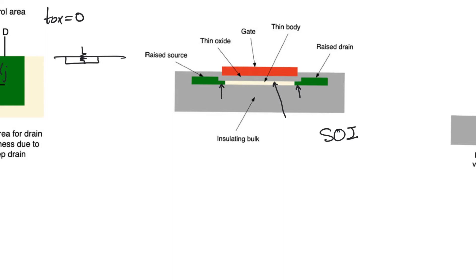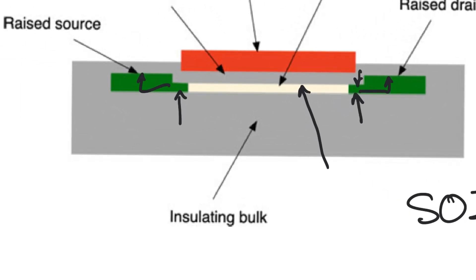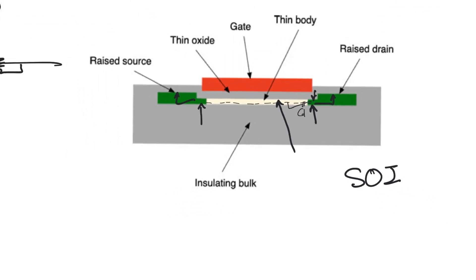The drain and the source are going to contact with the body in a very small area and this reduces the area of the drain that could have a capacitive coupling to the channel. But does this not increase the resistance of the drain? We then form a raised drain. So we raise the drain and we raise the source. We don't keep them to this thickness to prevent an increase in drain resistance.